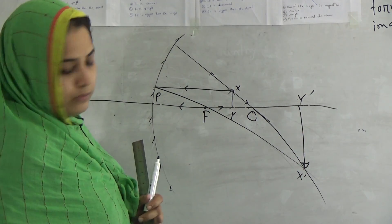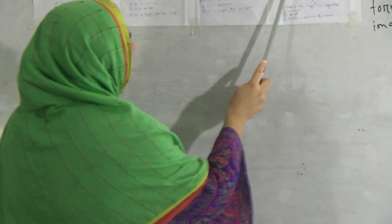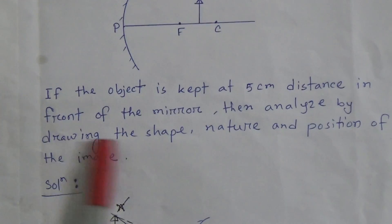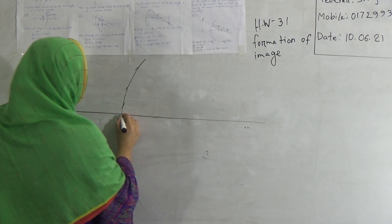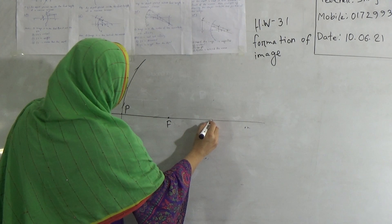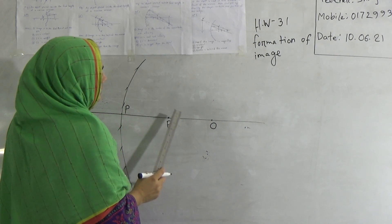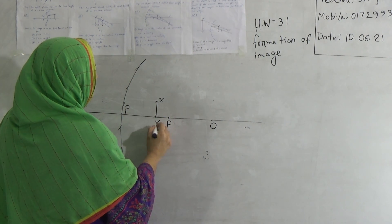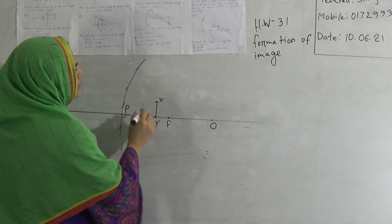Now the next question: for a concave mirror, the object is kept at 5 centimeter distance in front of the mirror — analyze the shape, nature, and position of the image by drawing a ray diagram. Draw a concave mirror with principal axis, marking pole P, focal point F, and center of curvature O. The object at 5 cm is inside the focal length, so suppose XY is the object here. First ray: from point Y to the pole P — after reflection it goes through the same path.